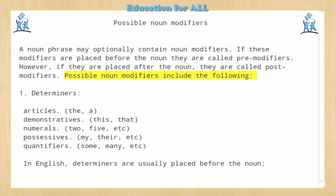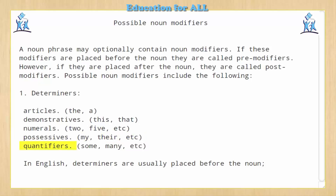Possible noun modifiers include the following. 1. Determiners: articles (the, a), demonstratives (this, that), numerals (2, 5, etc.), possessives (my, their, etc.), and quantifiers (some, many, etc.). In English, determiners are usually placed before the noun.